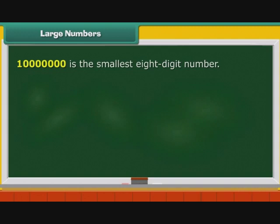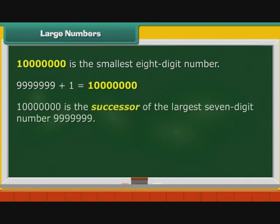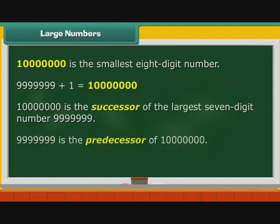One crore is the smallest eight-digit number. One crore is the successor of the largest seven-digit number. In other words, the largest seven-digit number is the predecessor of the smallest eight-digit number.